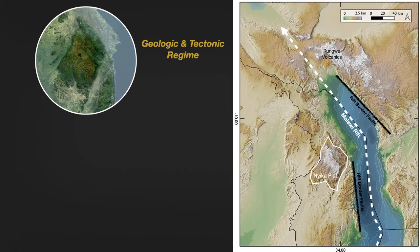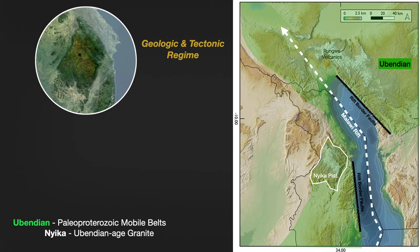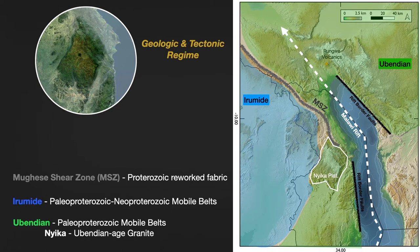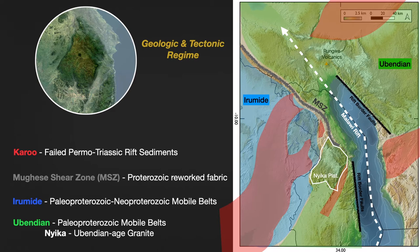Zooming back to Malawi and Nyika, the tectonic history of the area is complex. Nyika itself is a Proterozoic granite intrusion belonging to the Ubendian orogeny. The Paleoproterozoic Irumide orogeny is adjacent to Nyika's western border. Along Nyika's northeastern edge, the Mughese shear zone establishes the contact between these two mobile belts. And in some areas around and bordering Nyika, Permo-Triassic Karoo sediments outcrop in failed Karoo faults and Karoo rift valleys.